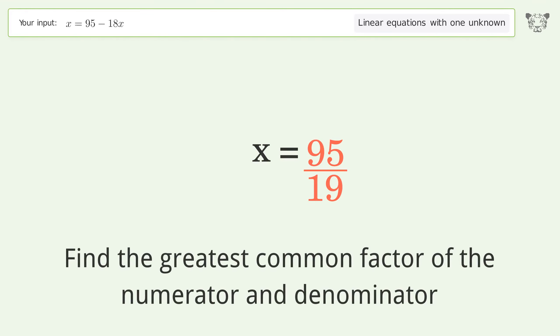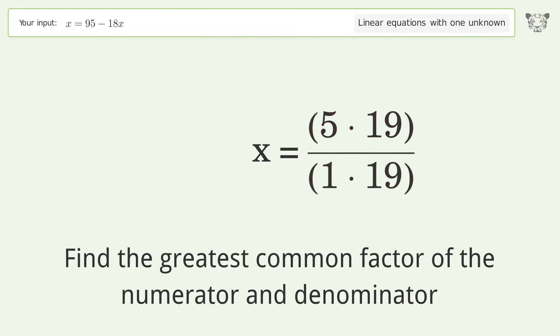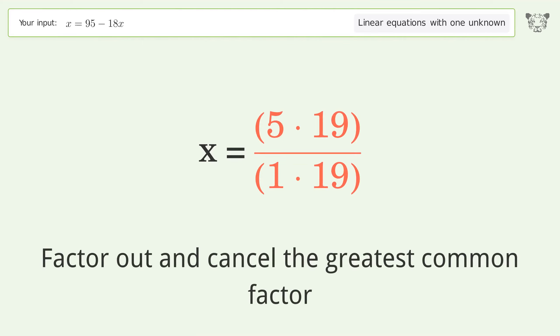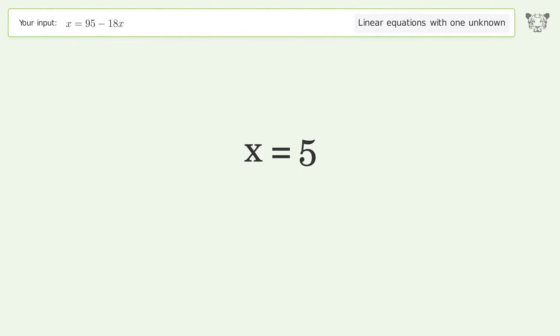Find the greatest common factor of the numerator and denominator. Factor out and cancel the greatest common factor. And so the final result is x equals 5.